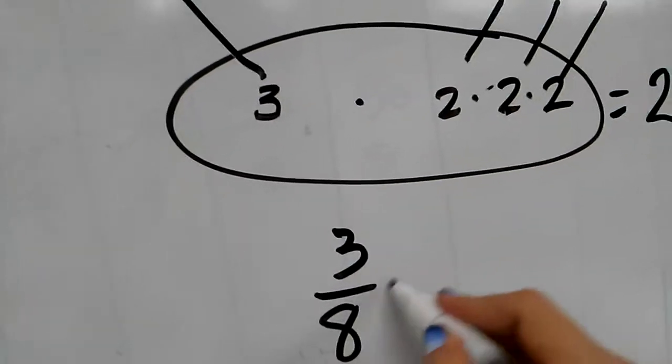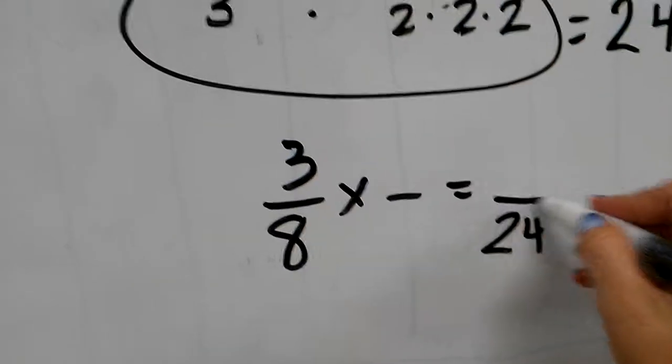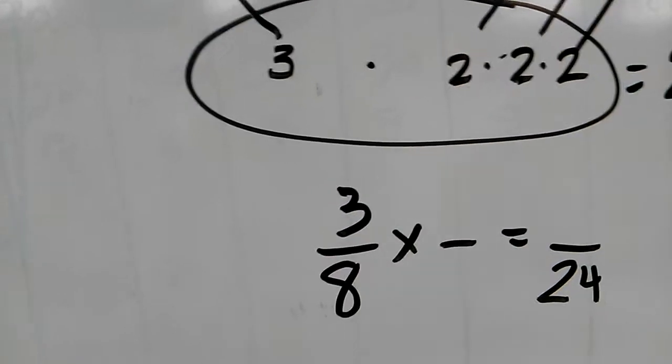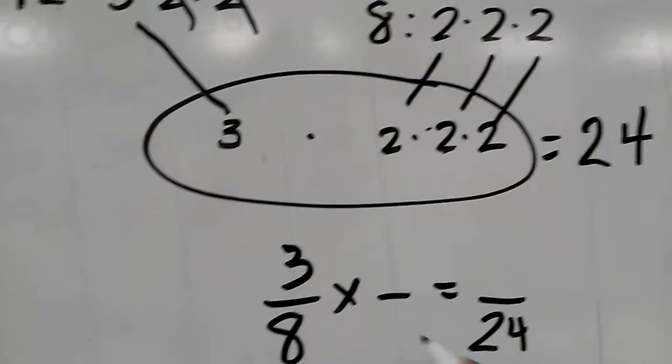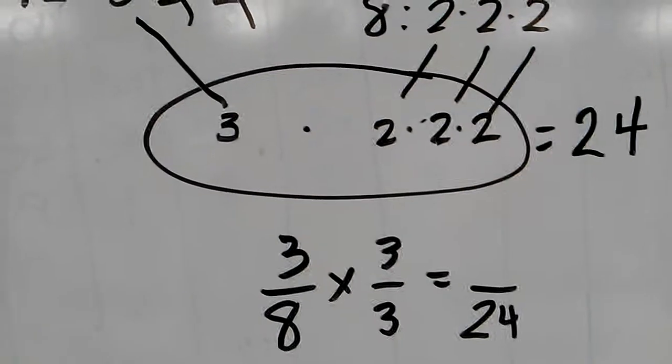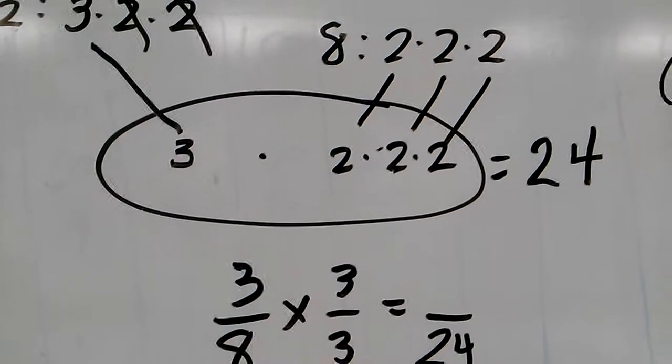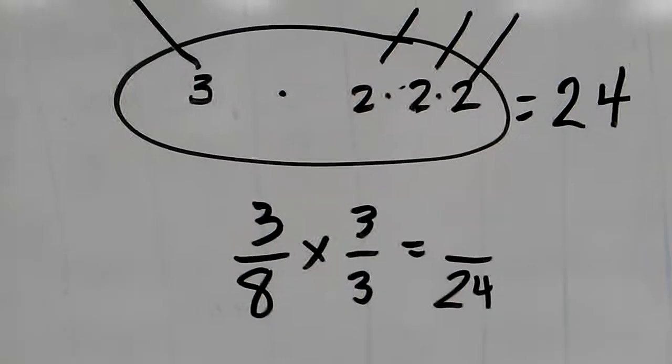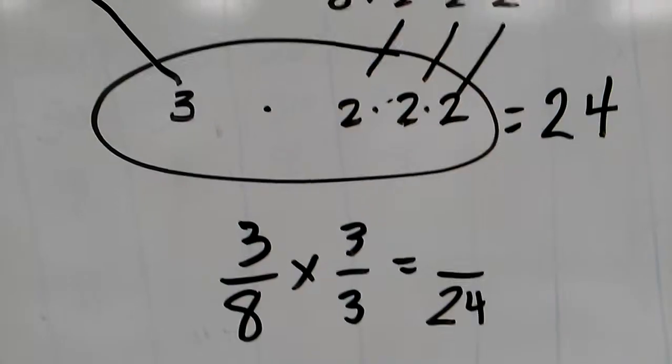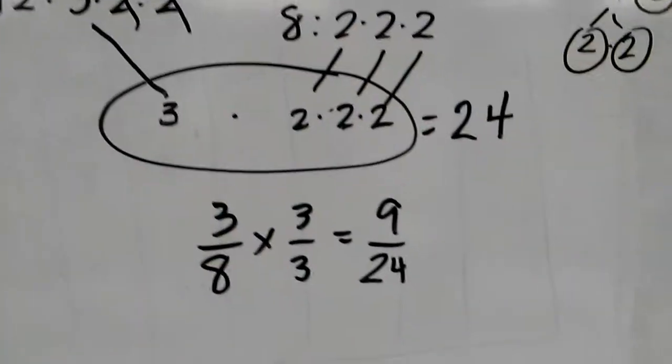For 3/8, I know I need to multiply it by something so that I get a denominator of 24. I know that 8 times 3 is 24, so I multiply by 3/3. I multiply by 3/3 because it is an equivalent form of 1, which means it equals 1. And anytime I multiply something by 1, the answer is equivalent. 3 times 3 is 9, so 3/8 is equivalent to 9/24.